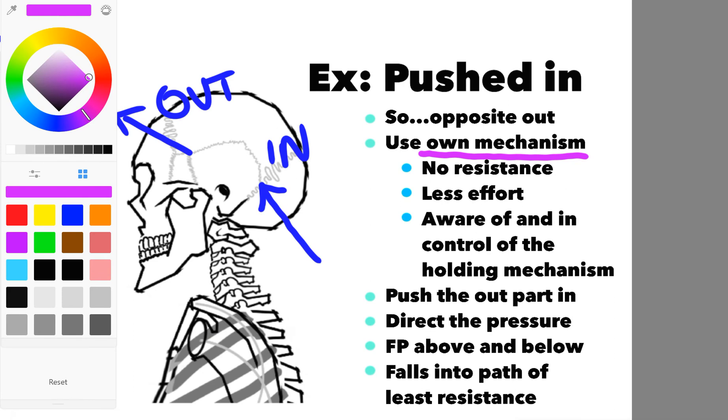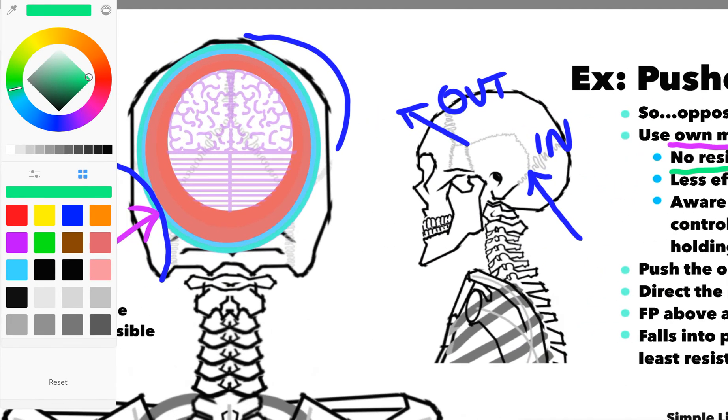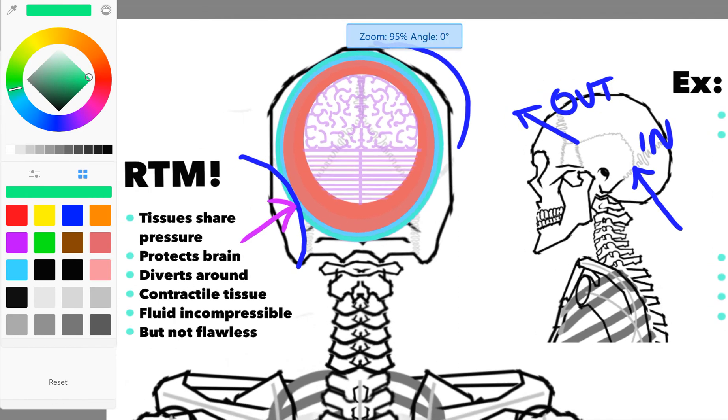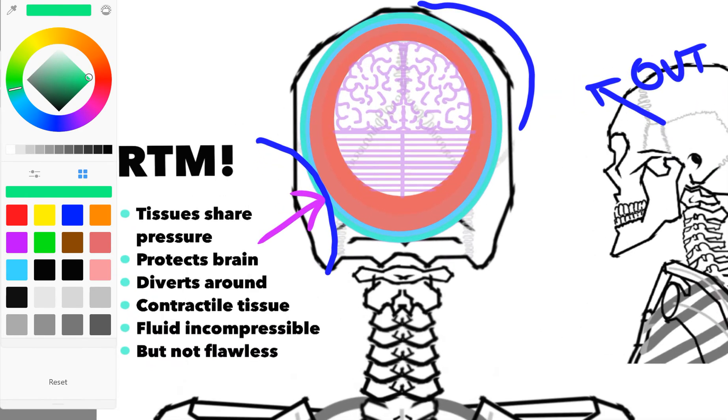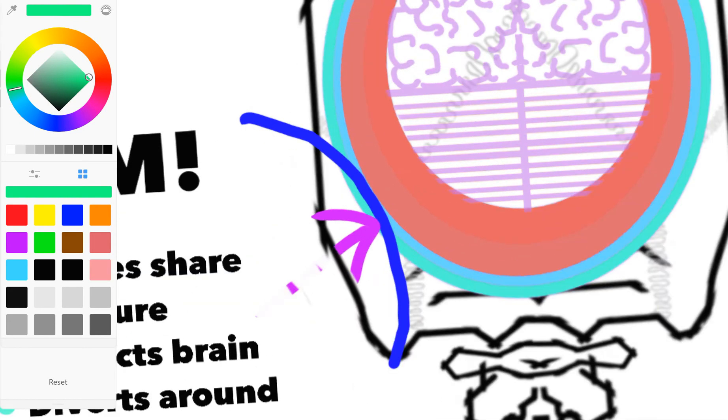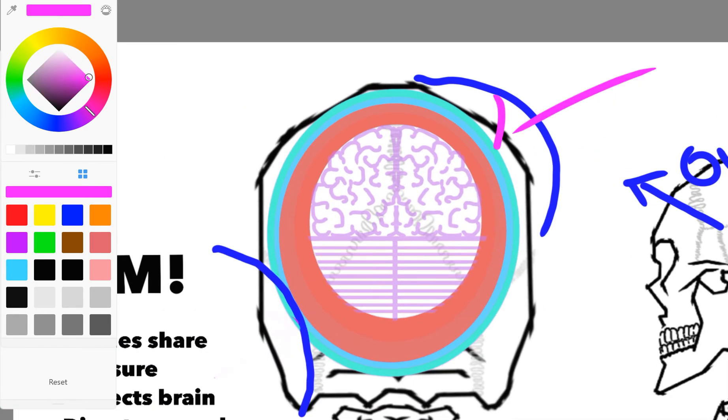We encounter no resistance from the tissues. Imagine instead I wasn't using this reciprocal tension membrane, I didn't want to correct it using its own important and natural mechanisms. I just wanted to thrust that skull back into place.